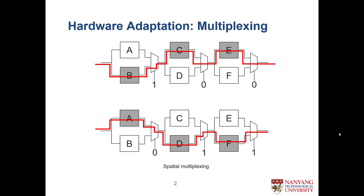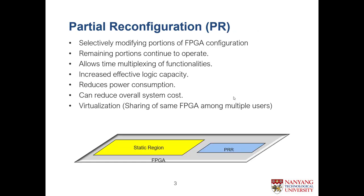This is the main motivation for partial reconfiguration. Suppose you have a system and you don't want to use all the modules always — some modules are mutually exclusive. As shown in the picture, I have a processing chain with modules A, B, C, D, E, F, but A and B are mutually exclusive, C and D are mutually exclusive, E and F are mutually exclusive. The traditional way is to insert multiplexers between these modules and choose whichever module you need.